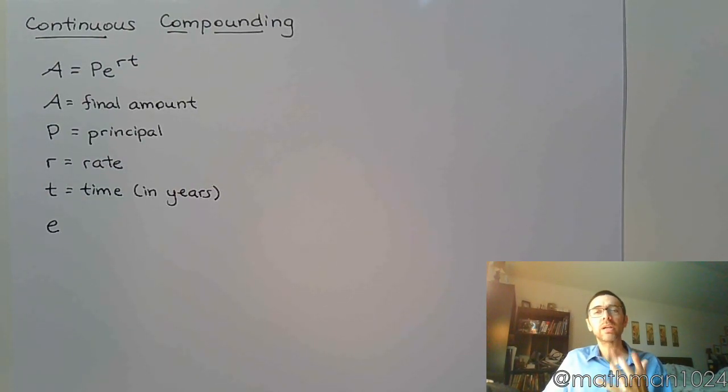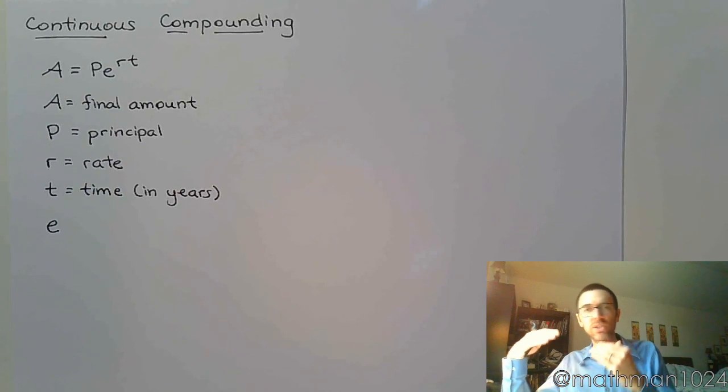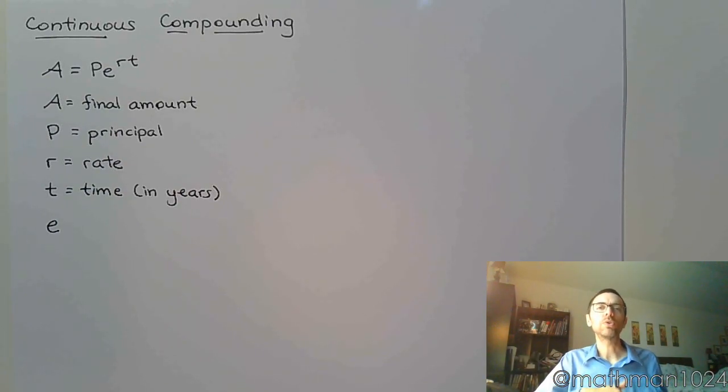So we're talking about continuous versus discrete. Discrete is happens there, happens there. Continuous is like the time spectrum that we're on. Time is continuous. There are no jumps, there are no blips, there are no gaps. It's just always going.